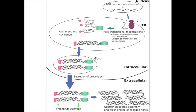Type 1 collagen, the principal protein in bone and many other connective tissues, is synthesized as a precursor molecule, procollagen, which consists of two proα1 and one proα2 chain. Each proα chain typically contains a central triple helix domain flanked by two globular extensions, the aminoterminal and carboxyterminal propeptides. The c-propeptides, which have a highly conserved sequence, are essential for correct selection and association of the three proα chains, thereby initiating triple helix formation.